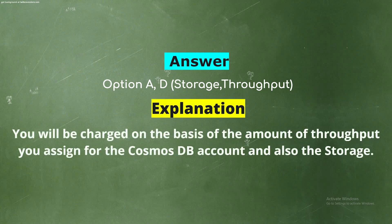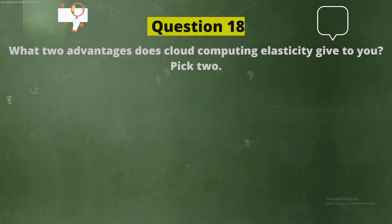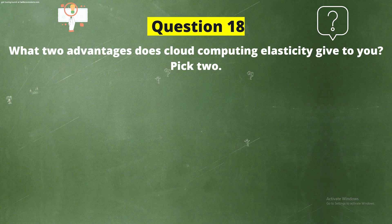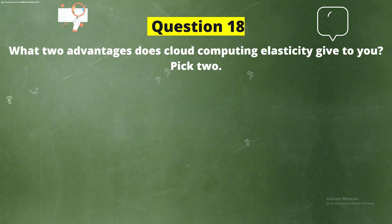Explanation: You will be charged on the basis of the amount of throughput you assigned for the Cosmos DB account and also the storage.